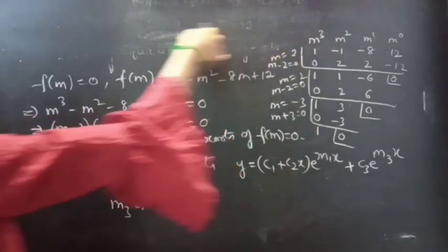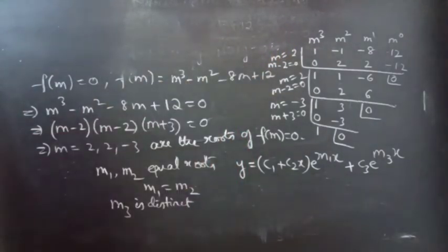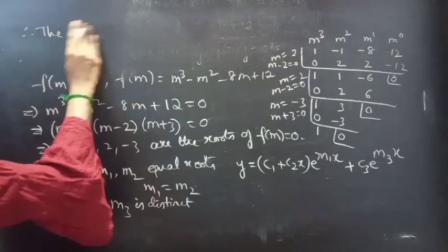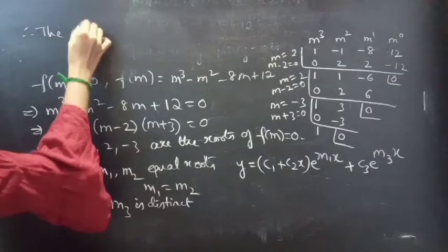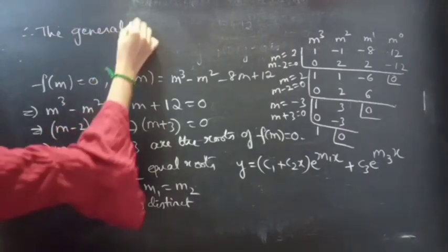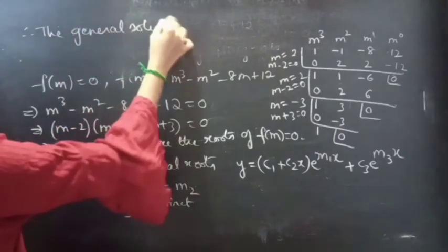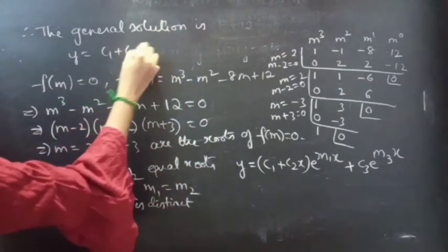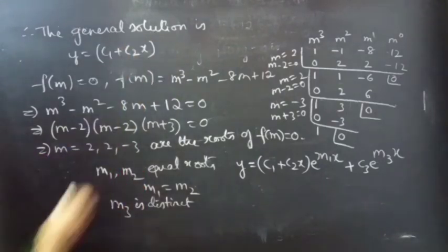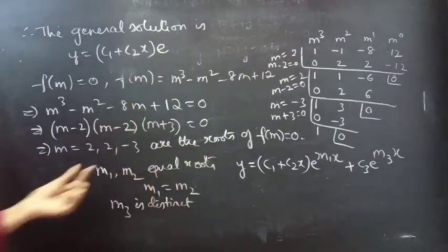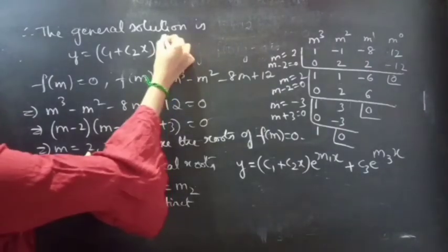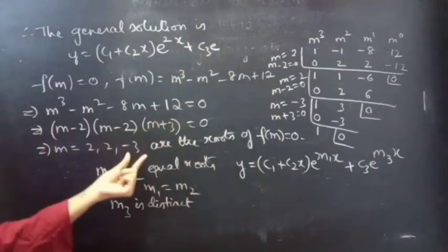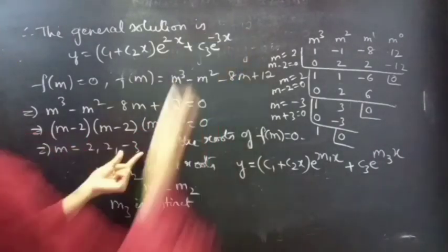Therefore, the general solution is y equals c1 plus c2x into e power 2x, since m1 equals m2 equals 2, plus c3 into e power minus 3x, where minus 3 is the distinct root.